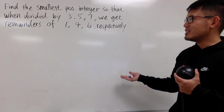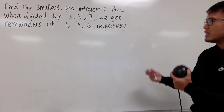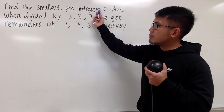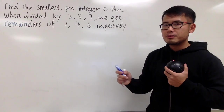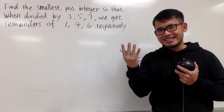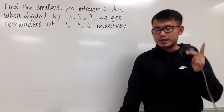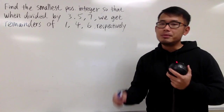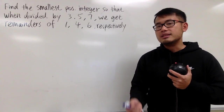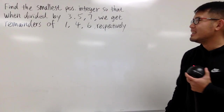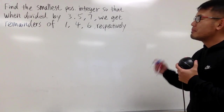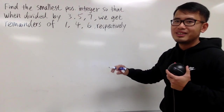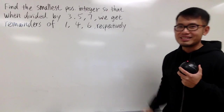Maybe you haven't seen how to solve this kind of question before, but we can think about it. For example, can you give me a number so that when we divide by 3 we get 1 as the remainder? For example, 4 works — 4 divided by 3 is 1 with remainder 1. We can also have 25, because 25 divided by 3 is 8 with remainder 1. But the number has to satisfy all three conditions. Please pause the video and try this first.